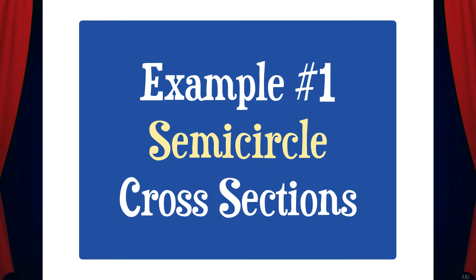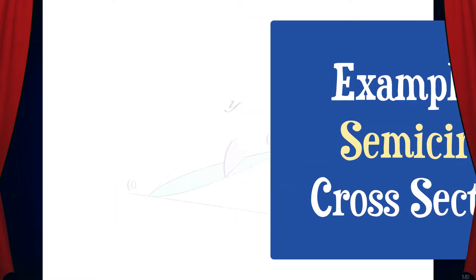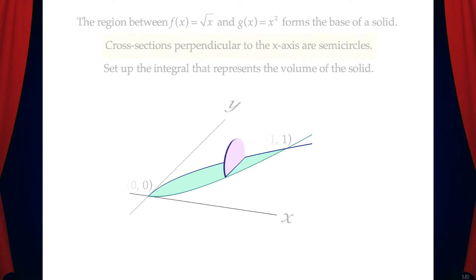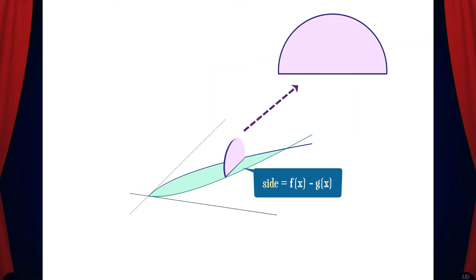Example 1: semicircle cross-sections. The region between f of x equals radical x and g of x equals x squared forms the base of a solid. Cross-sections perpendicular to the x-axis are semicircles. Set up the integral that represents the volume of the solid. So the first thing we need to do is find an equation for the area of a semicircle in terms of its side.